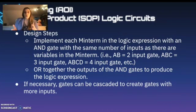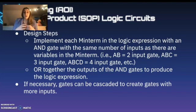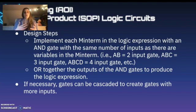For our design steps for creating a sum of products logic circuit, we need to implement each term in the logic expression with an AND gate with the same number of inputs as there are variables. So if we have AB, that's a two-input gate; ABC, a three-input gate; ABCD, a four-input gate. At the end, we OR together the final outputs of the AND gates to produce the logic expression. Sometimes we don't have access to gates with four or three inputs and are limited to two-input gates, in which case we'll need to cascade inputs to create the sum of products expression.